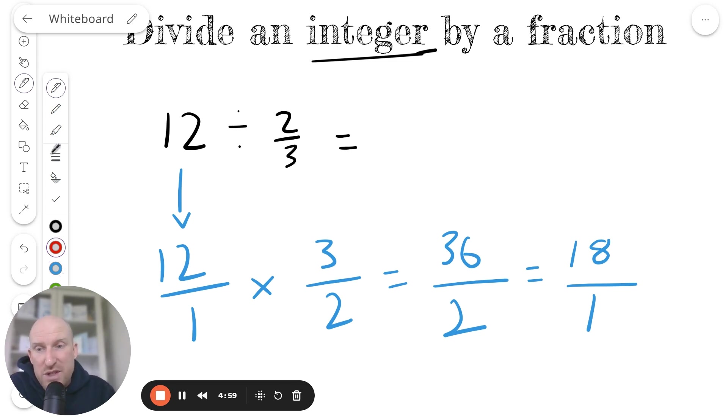But if I want to go a step further, which most teachers will want you to, and write this as a mixed number, it's just 18 whole ones. And there we go. I've divided an integer by a fraction there. And notice again, the answer that I get is larger than the number that I started with. But that's supposed to happen.